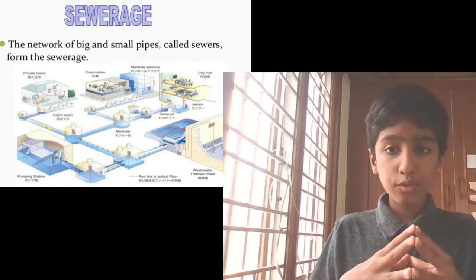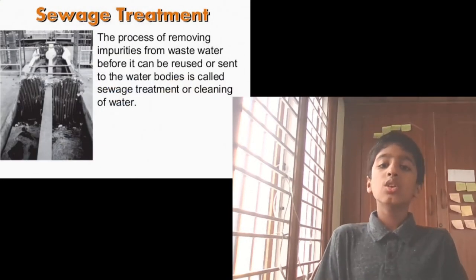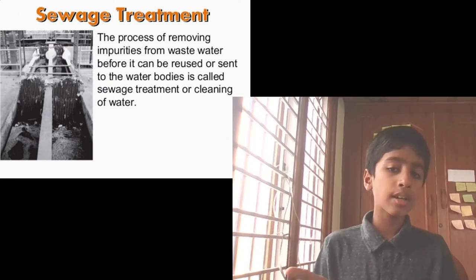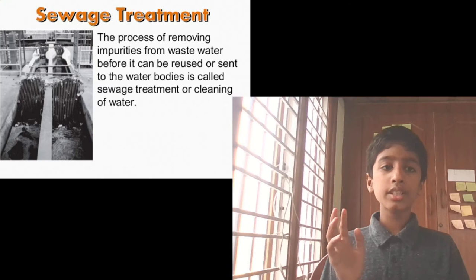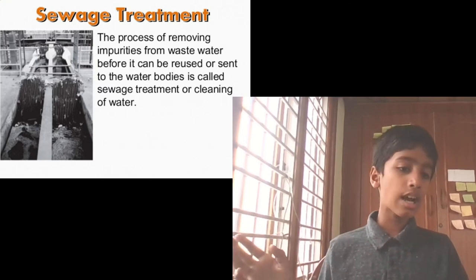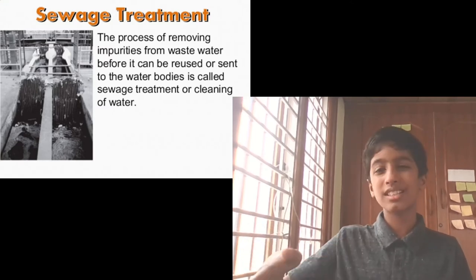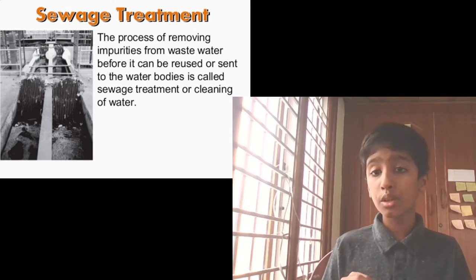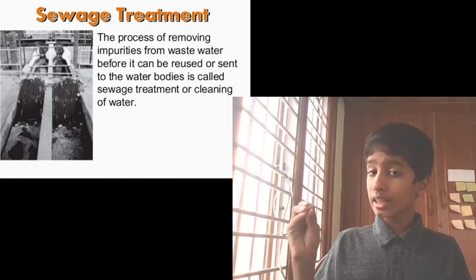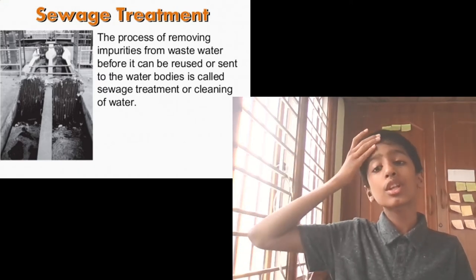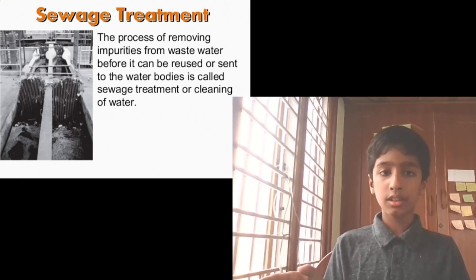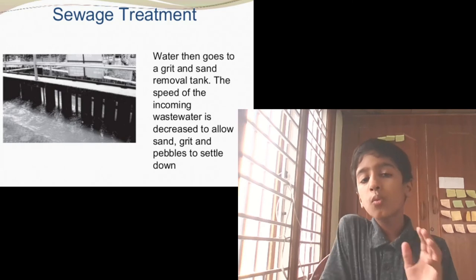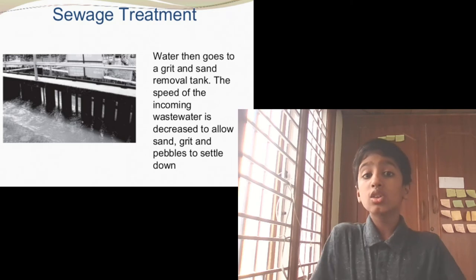Now, sewage treatment. Fresh water turns into wastewater, which is carried by sewers through the sewerage network. This water has to be treated because it is harmful for the environment and for us. The process of removing impurities from wastewater before it can be reused — for flushing toilets or released into water bodies — is sewage treatment. The water first goes to a grit and sand removal tank.